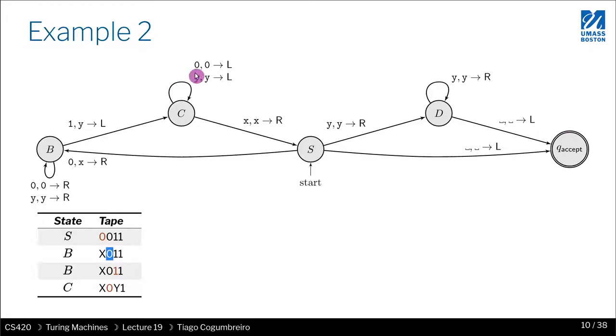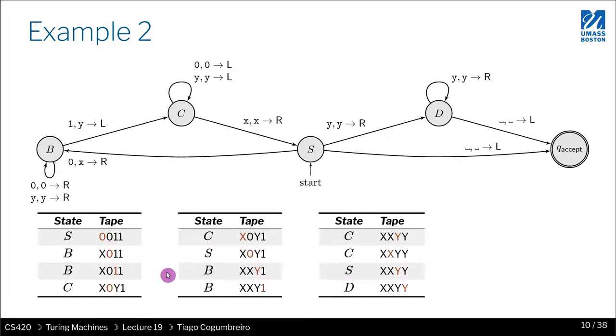Well, from this automaton, I know that I have to move back to B. Okay, so now my next configuration is BX011. And so on. So essentially what I want you to focus your attention on is each of these rows are called configurations.